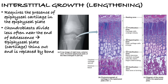Interstitial growth requires the presence of epiphyseal cartilage in the epiphyseal plate. In an x-ray, you might see what looks like a space and think it's a fracture, but this actually tells you the individual is still growing. This space consists of cartilage. If the person has stopped growing, that cartilage will be replaced with bone. So this tells us the bone still has the ability to grow longer.